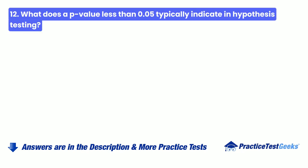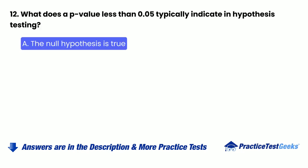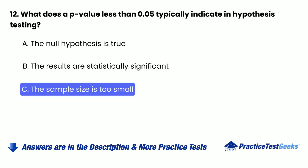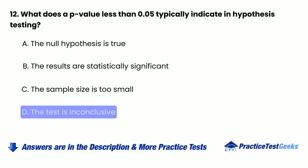12. What does a p-value less than 0.05 typically indicate in hypothesis testing? a. The null hypothesis is true. b. The results are statistically significant. c. The sample size is too small. d. The test is inconclusive.